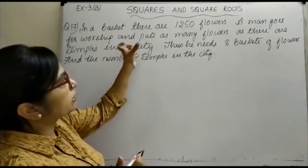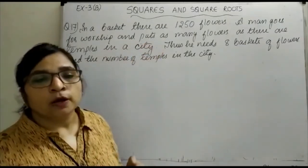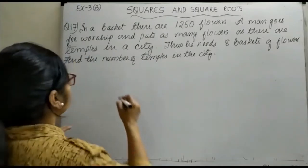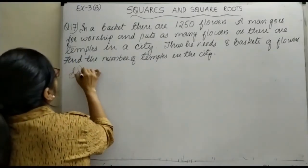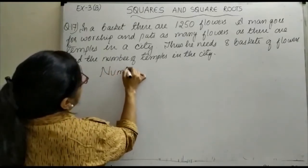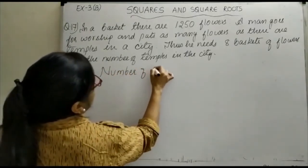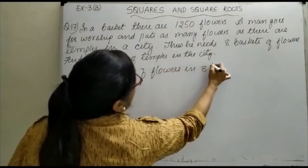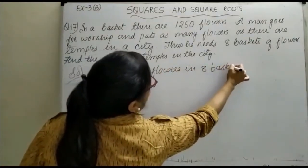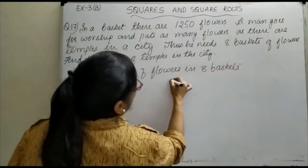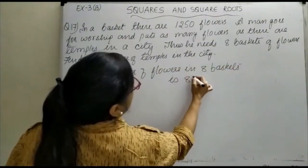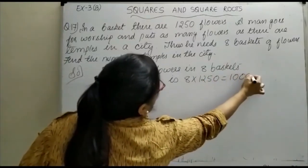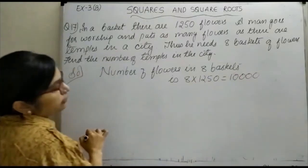First, one basket has 1250 flowers. Therefore, the number of flowers in eight baskets is 8 × 1250, which equals 10,000. This is the total number of flowers.